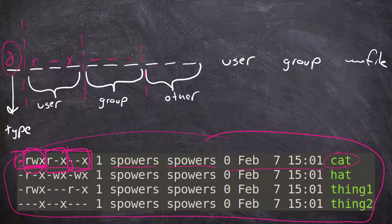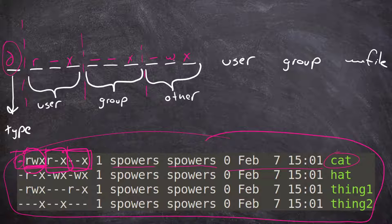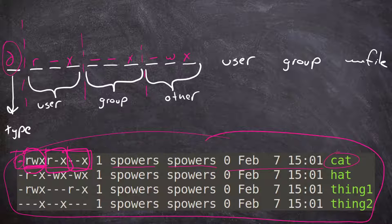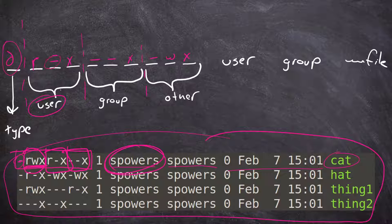It's either going to be a dash or the letter — you're never going to have an R in the wrong field, that's nonsensical. It's either on or off for every one of those nine fields. The three sections represent the user, the group, and everybody else. For example, the user might have read access but not write, and it could be an executable file.